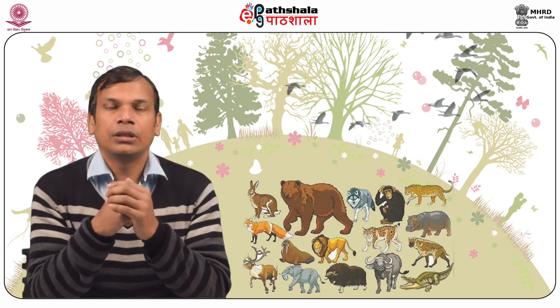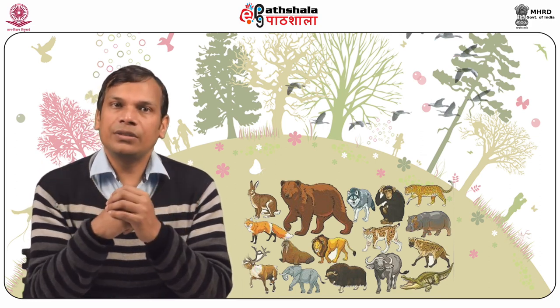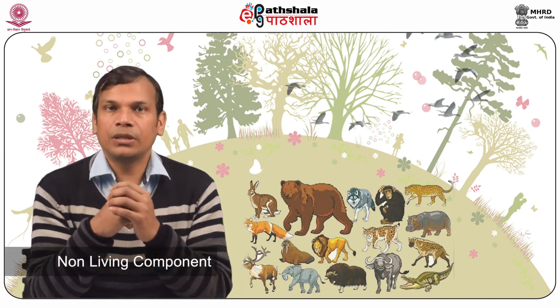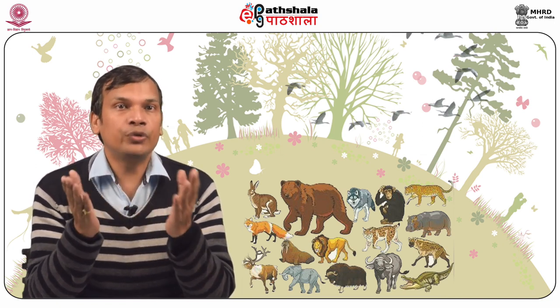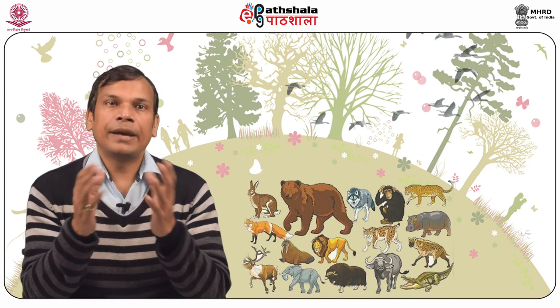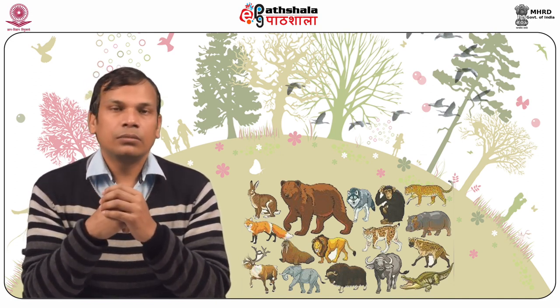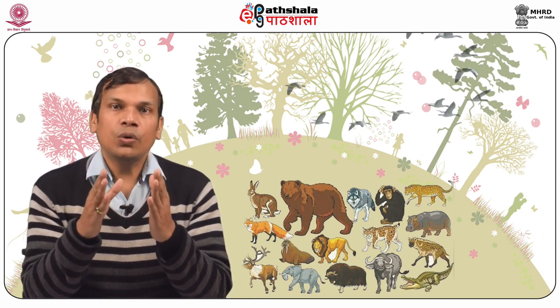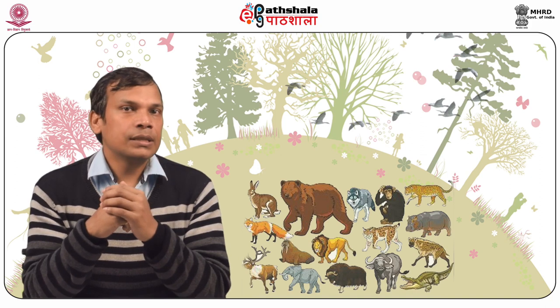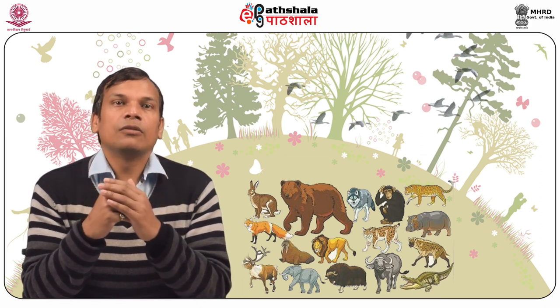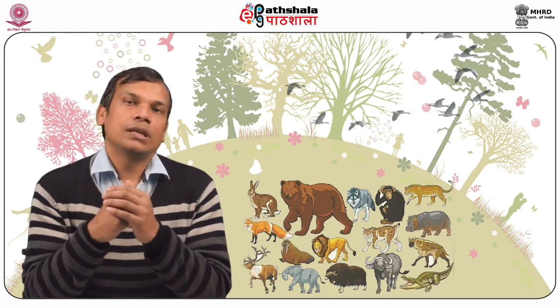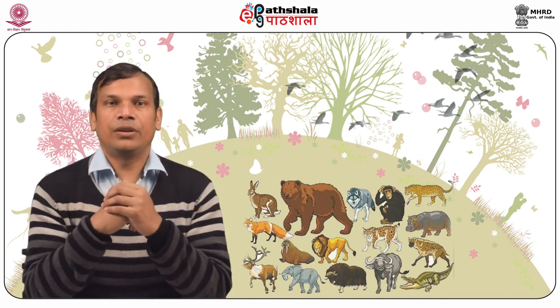Ecosystem is a functional unit in which all living organisms and non-living components of the environment are linked together through energy flow and nutrient cycle. The term ecosystem was coined by A. Tansley in 1935. The word ecosystem is derived from eco plus system — eco means biotic plus abiotic, and system means dynamic functional attributes. It involves energy and cycling of nutrients between biotic and abiotic components.